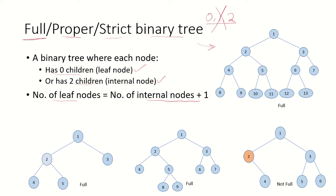Let's take an example. We have this root node with 2 children, 2 and 3. Node 2 again has 2 children. Node 4 has 2 children. Nodes 8 and 9 don't have any children, so these are leaf nodes. Node 5 has 2 children, and 10 and 11 do not have any children, so they are also leaf nodes. Node 3 has 2 children. Node 6 has 2 children, and node 7 does not have any children. So each node has either 0 or 2 children — this is a full binary tree.